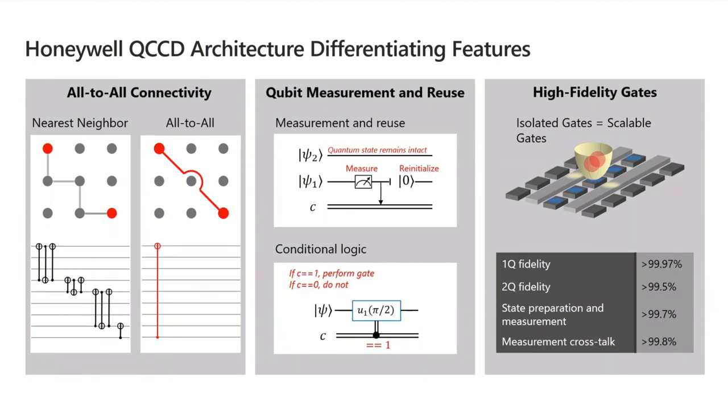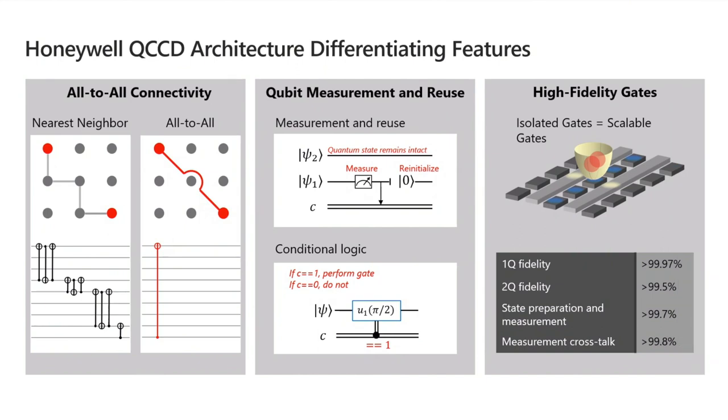So everyone has to invent this eventually. But with the QCCD architecture, it's really quite simple to do because we can just move the qubits we want to protect out of the way when we do a measurement. Similarly, having this movable qubits gives us a native ability to have very high fidelity gates.